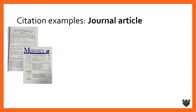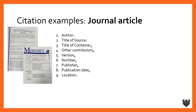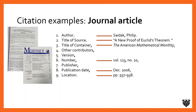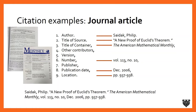For our third example, let's look at an academic journal article. The article is called A New Proof of Euclid's Theorem, published in the American Mathematical Monthly. We put up our MLA elements and import the ones that are present — a different mix. The author is Philip Psyduck. The title of the source is A New Proof of Euclid's Theorem. The title of the container is the journal name: American Mathematical Monthly. Because it's a periodical, we indicate the number: volume 113, number 10. The publication date is December 2006, and the location is pages 937 to 938. Put it all together and we have our journal citation.